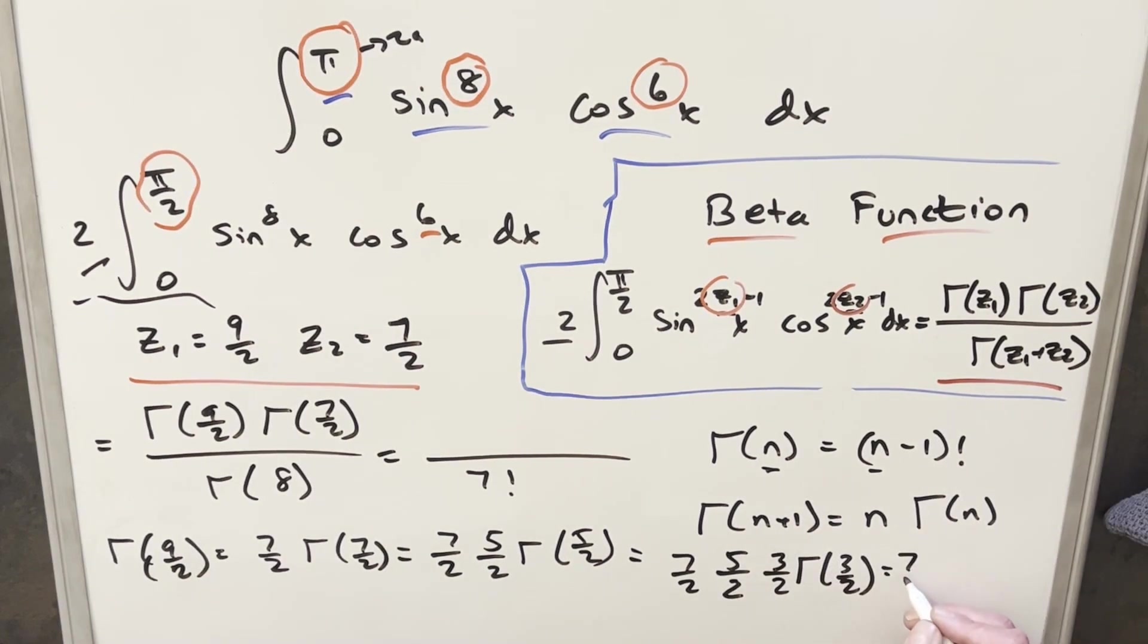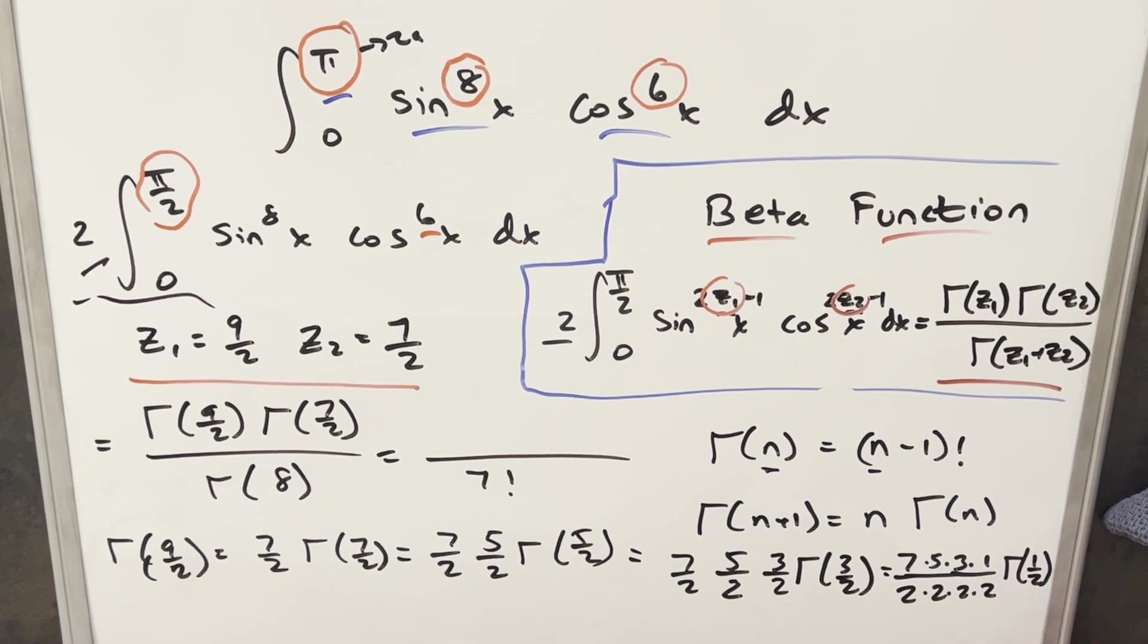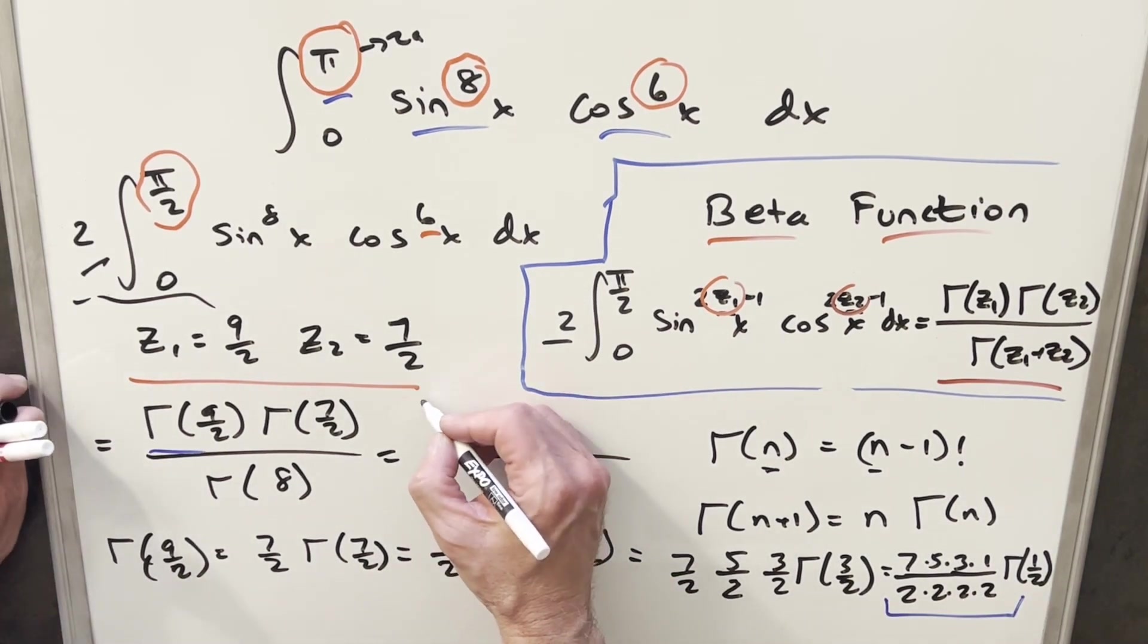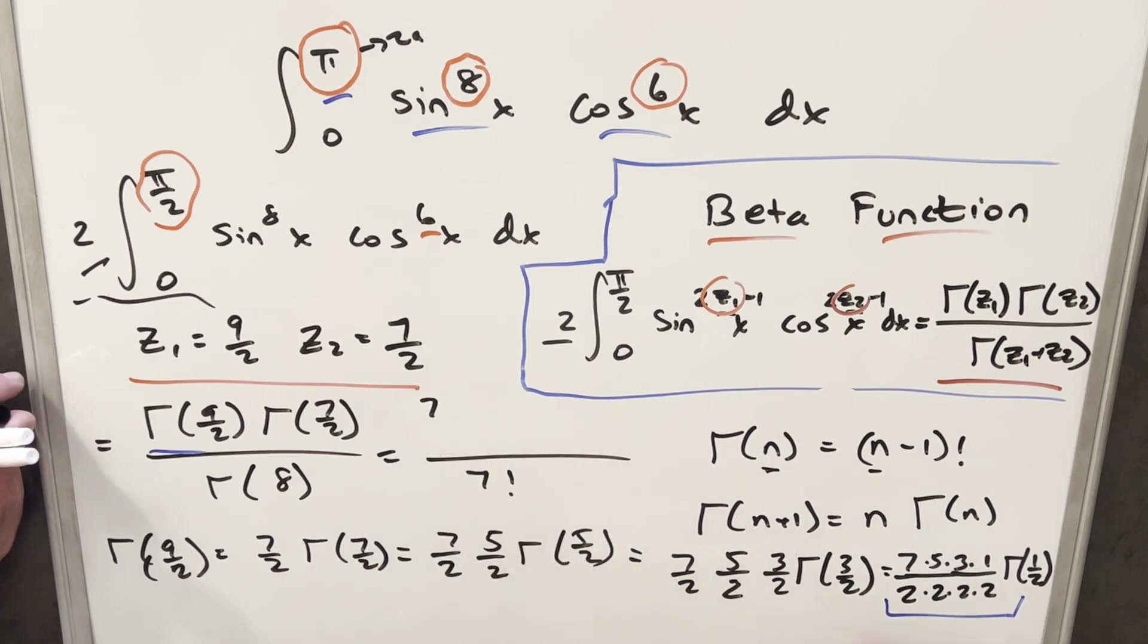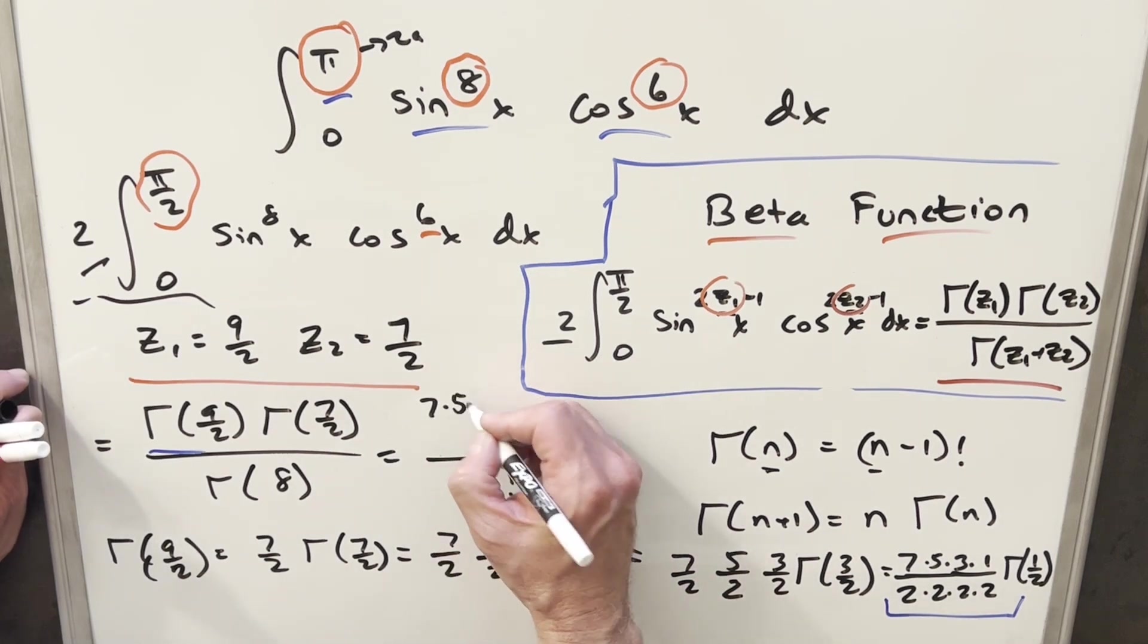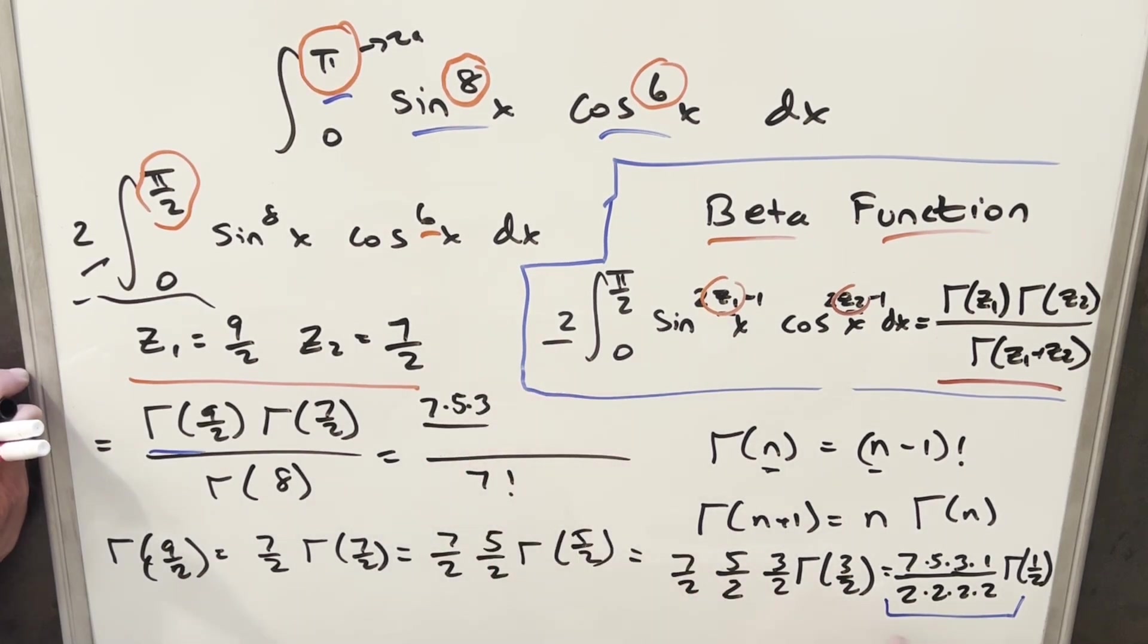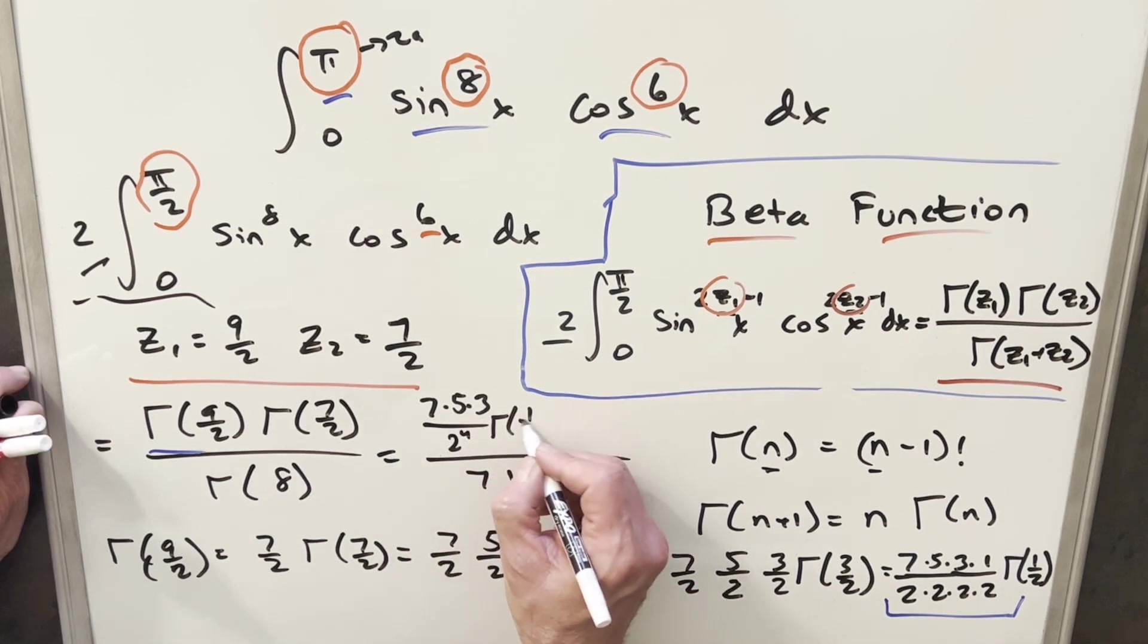But then finally, I can write this as 7 times 5 times 3 times 1. And then for gamma of 3 halves, I'm writing it as 1 half times gamma of 1 half. So let's take this and plug it back in for gamma of 9 halves. I'm going to consolidate it a little bit. For this numerator, I write it as 7 times 5 times 3, and for this denominator, I write it as 2 to the 4th times gamma of 1 half.